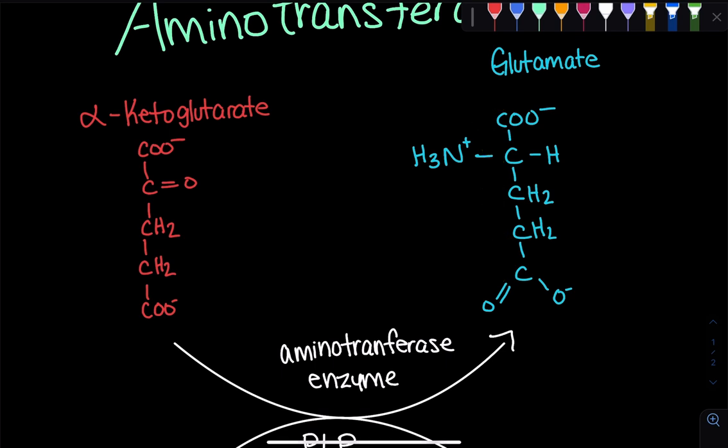Now if we compare their chemical structure, we've got a carboxylate at this end, carboxylate at this end, two CH2 groups, two CH2 groups, carboxyl, a carboxyl.